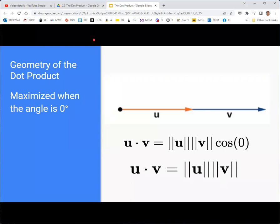And so the dot product of two vectors is maximized when they are pointing in the same direction. And in that case, it is just equal to the product of their magnitudes, which is interesting.